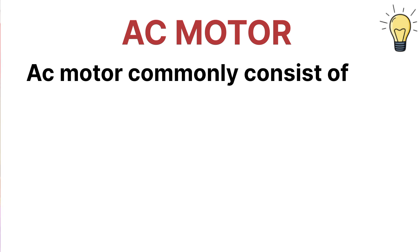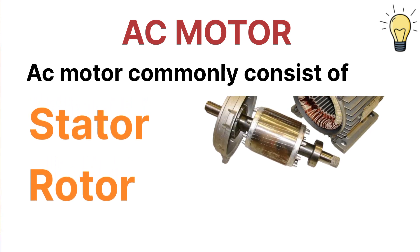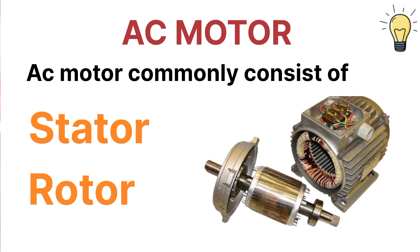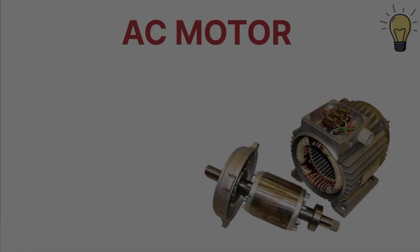The AC motor commonly consists of two basic parts: an outside stationary part which produces a rotatory magnetic field, and the rotor which is attached to the shaft, producing a second rotatory magnetic field. So the two main parts are the stator, which is stationary, and the rotor, which is rotating in nature.